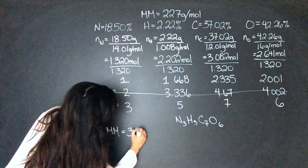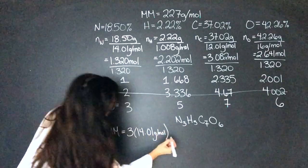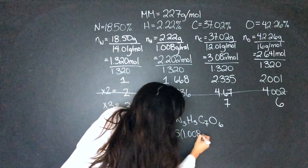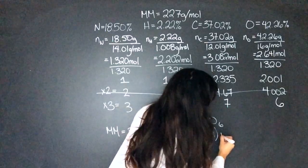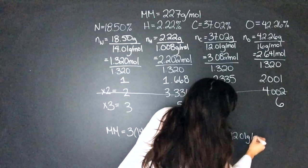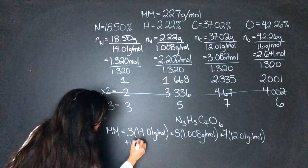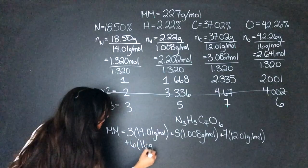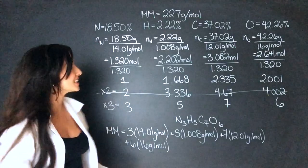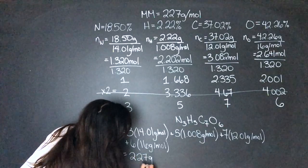Three nitrogens, 14.01 grams per mole, plus five hydrogens, 1.008, plus seven carbons, 12.01 grams per mole, and then I'll put the oxygen down here, plus six oxygens, 16 grams per mole. When we plug all of that into our calculator, it gets 227 grams per mole.